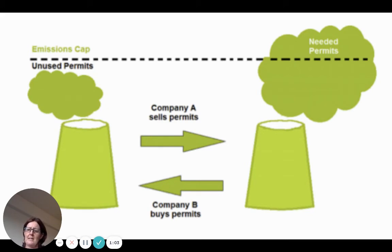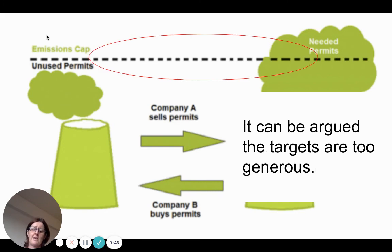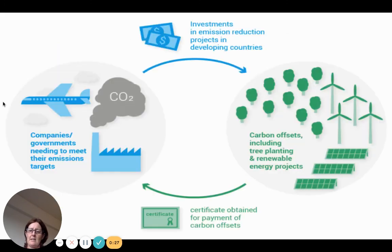We can also look at creating a carbon market — essentially what carbon trading is. The government sets a cap, defining exactly how much industry or businesses are allowed to emit each year, and over time this cap should lower. Permits are issued or auctioned; if you don't use them you can sell them to generate revenue, and if you need more you can purchase them. One criticism is that these government-set targets have been too generous in the past.